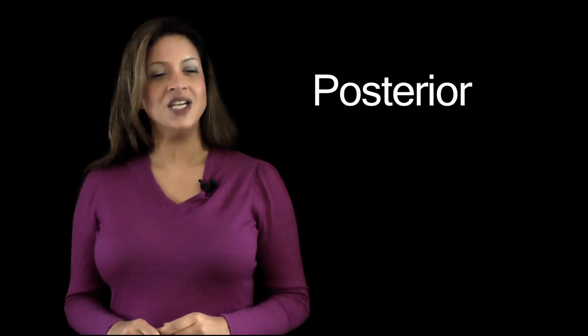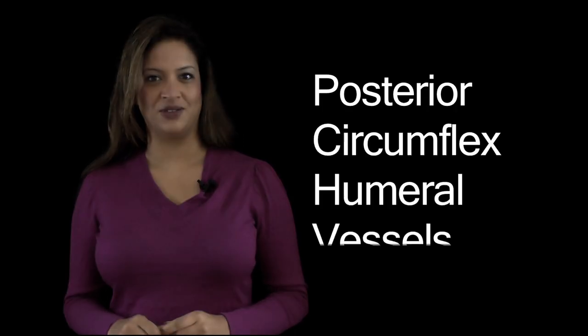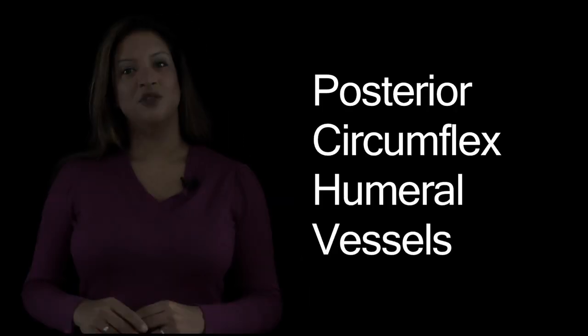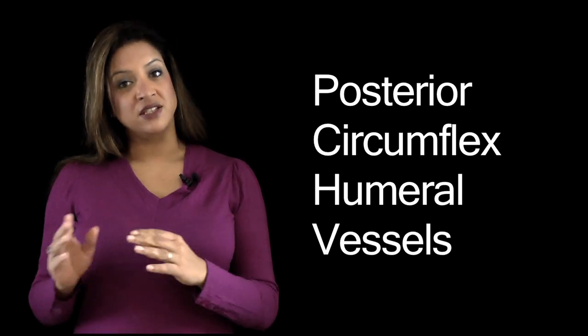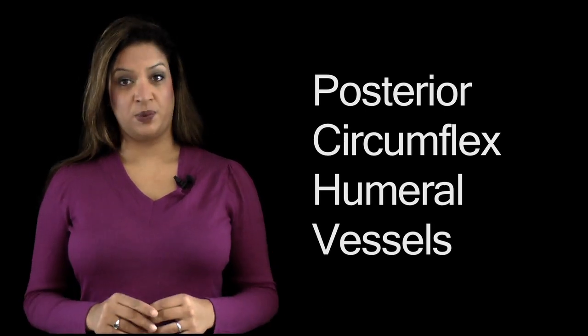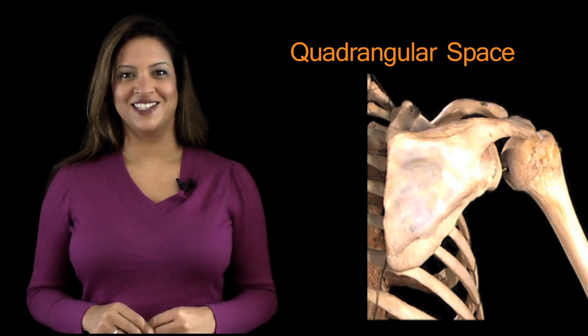As it passes down and underneath the capsule, it picks up a travelling companion — the posterior circumflex humeral vessels. These structures pass through a space to enter the posterior aspects of the upper limb, and this is the quadrangular space.